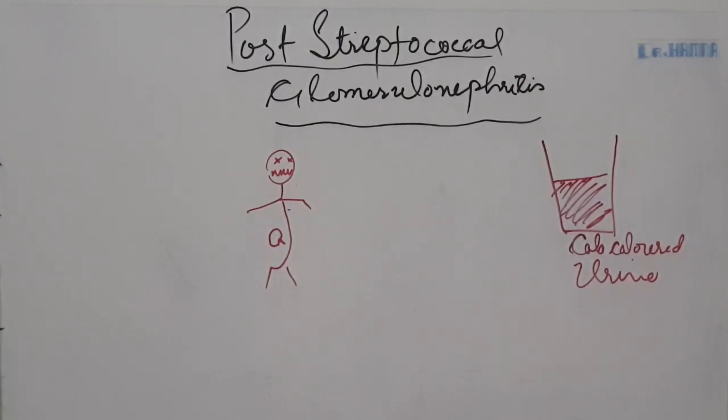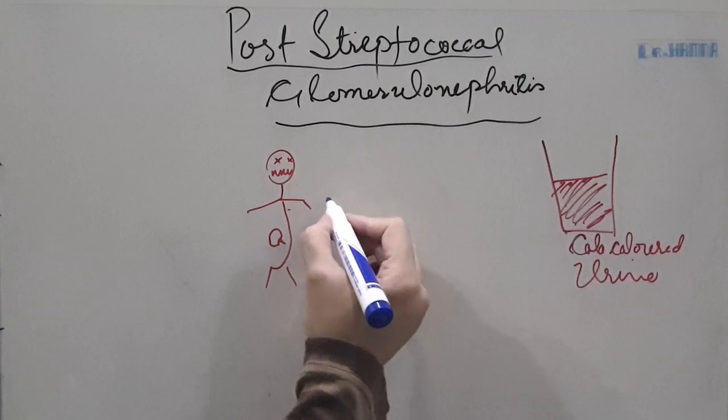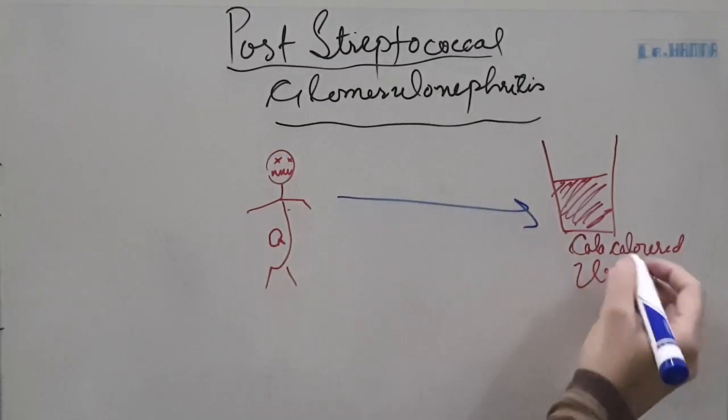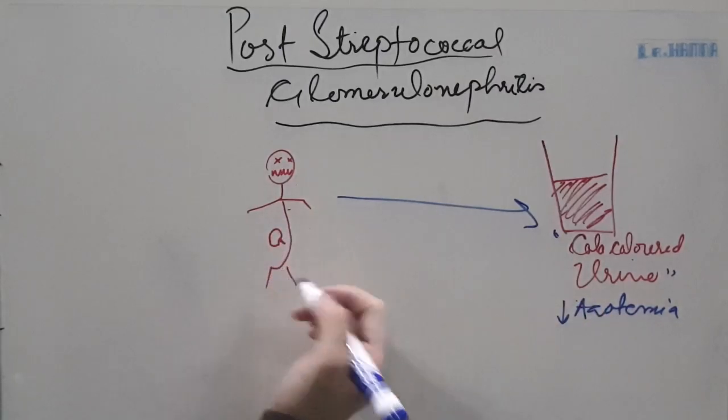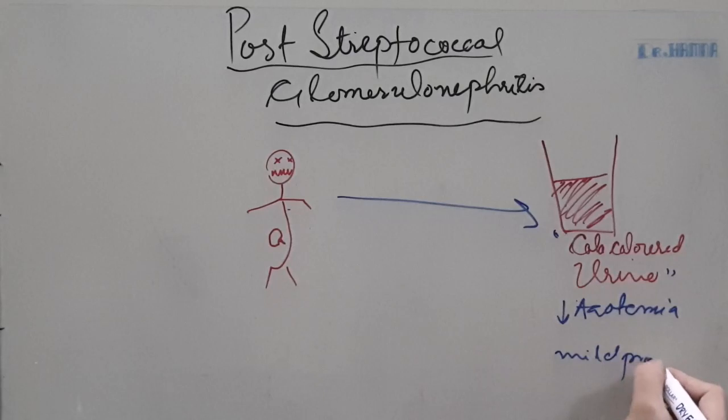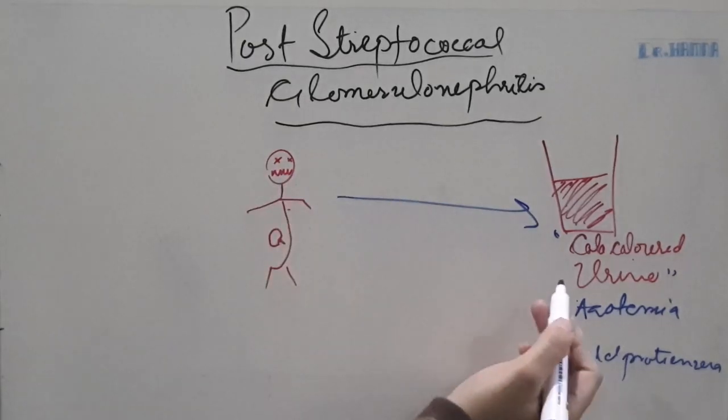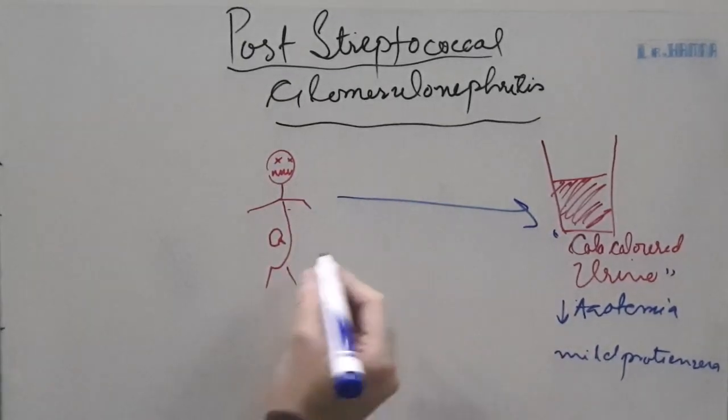So this is a patient, say for example XYZ. This patient came in your OPD with the complaints of cola colored urine, which is a key manifestation. Urine has turned from transparent to yellow, straw color to the color of cola, and decrease in the quantity of urine, that is azotemia, and mild proteinuria. So the patient is lethargic, has cola colored urine, azotemia and mild proteinuria. You investigate the patient, ask a few questions and you find out.